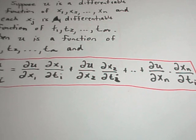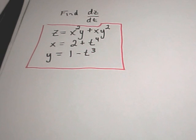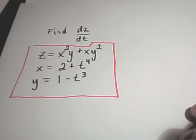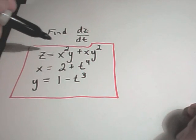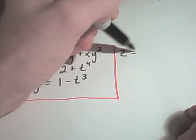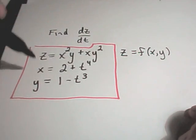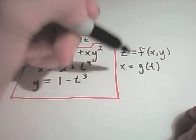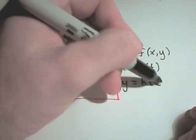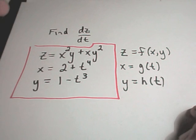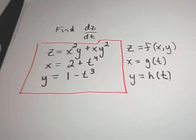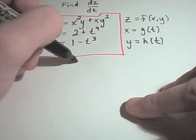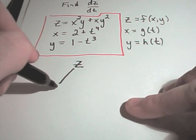Let's try to make some sense of this. In this case I'm going to find the derivative of z with respect to t. Notice what I have here: z depends on x and y, so z is a function of x and y. And then x is just a function of t, and y also just depends on the variable t, so it's a function of t. We want to find the derivative of z with respect to t.